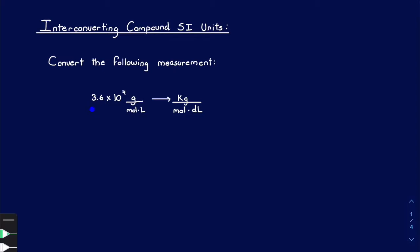In this example we have 3.6 times 10 to the 4 grams over moles times liters, and what we need to get to is kilograms over moles times deciliters. The first thing I like to do is look at how many conversions and what conversions I need to do. Grams needs to go to kilograms — that's one conversion. Moles to moles stays the same, and liters to deciliters. So overall we have two conversions.